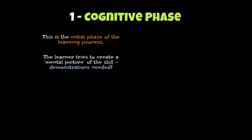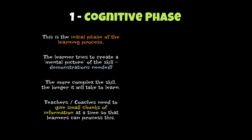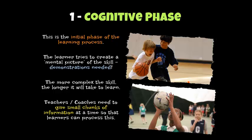The learner needs a vivid image as to what they're learning about. Quite obviously, the more complex a skill, the longer it will take to learn, and so if you're teaching a complex skill, teachers need to break the skill into sections and give small chunks of information at a time. This links to whole-part-whole learning, or part learning, where you're taking one part and isolating it, trying to improve it, and the cognitive learner can take that information on board better because it's only a small chunk, rather than showing the entire skill.